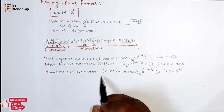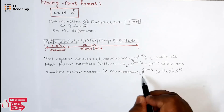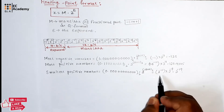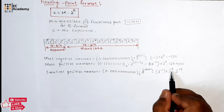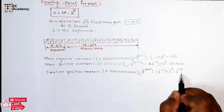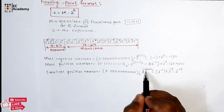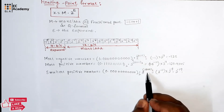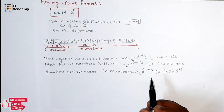The smallest positive number can be obtained as 0.00...01 (base 2) × 2^(10000 base 2), which can be written as 2^(−11) × 2^(−8), which is nothing but 2^(−19). Here, the mantissa part acts as the fractional precision, and the exponent will act as a scaling factor to increase the dynamic range of the number representation.